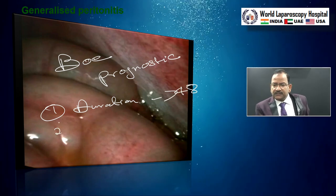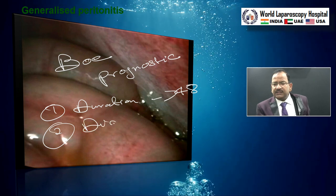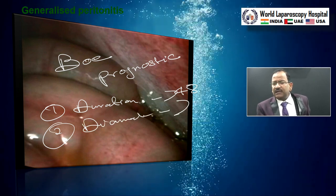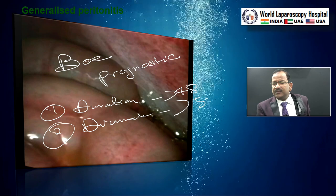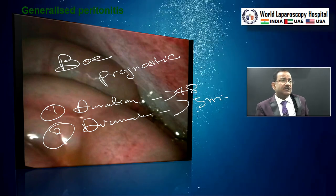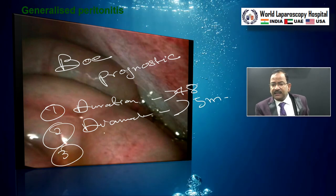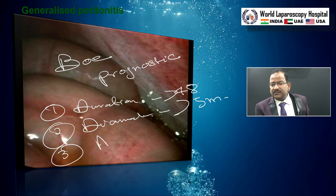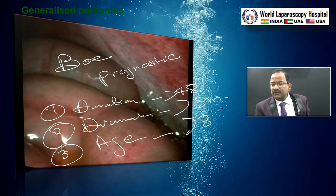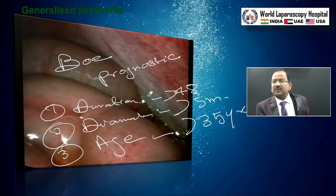Second is diameter of perforation: if diameter is more than 5 mm — that is a giant perforation, 1 cm, 2 cm — not good prognosis. Third is age of the patient: if age of the patient is more than 35 years, not good prognosis.